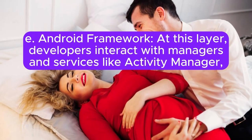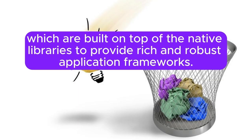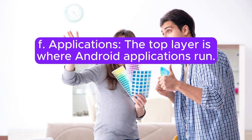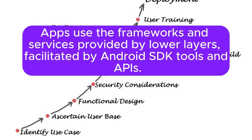Android includes a set of C/C++ libraries used by various system components and services — for example, the Surface Manager for composing window layers, WebKit for browser support, and the Media Framework for playing and recording audio and video. At the Android Framework layer, developers interact with managers and services like Activity Manager, Content Providers, View System, Notification Manager, and others built on top of native libraries. The top Applications layer is where Android apps run, using frameworks and services provided by lower layers, facilitated by Android SDK tools and APIs.